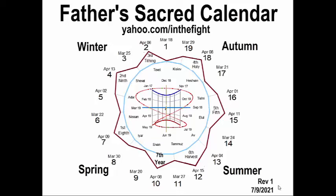Notice down in the corner — this was revision one of this calendar. This is my first attempt, and I already know I have to change it because some parts go counter-clockwise and some go clockwise. I'm going to make revision two more like a clock where everything moves in the same direction, so some things will be flipped so that everything moves in the same clockwise motion.